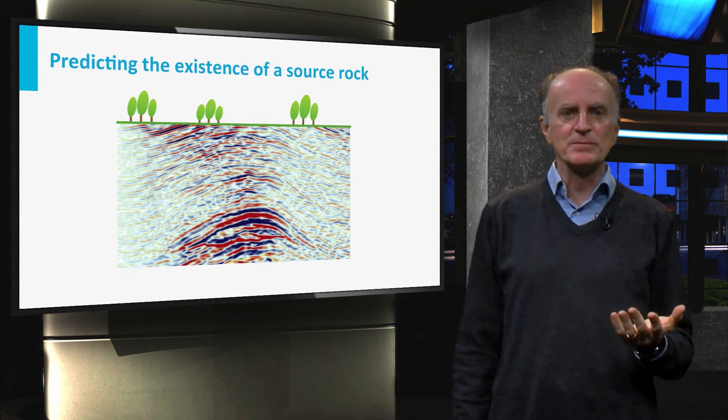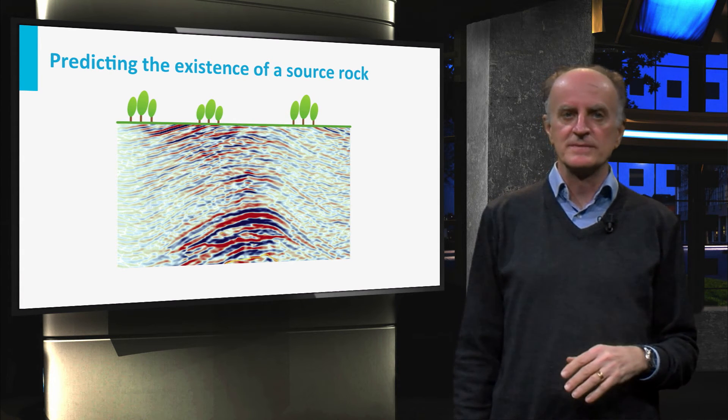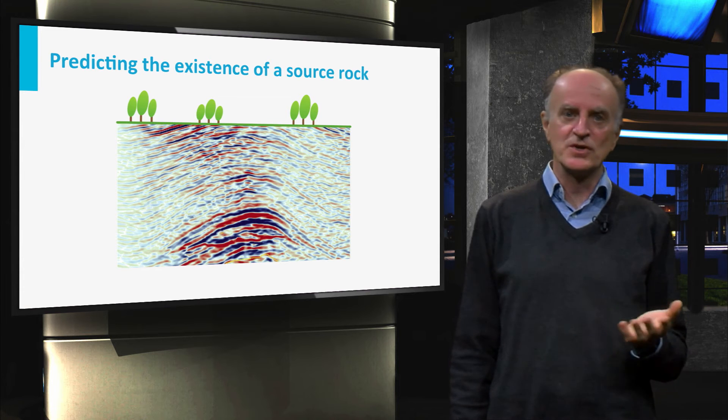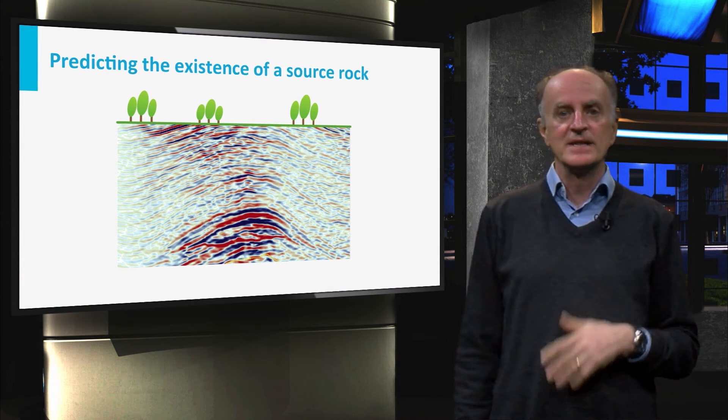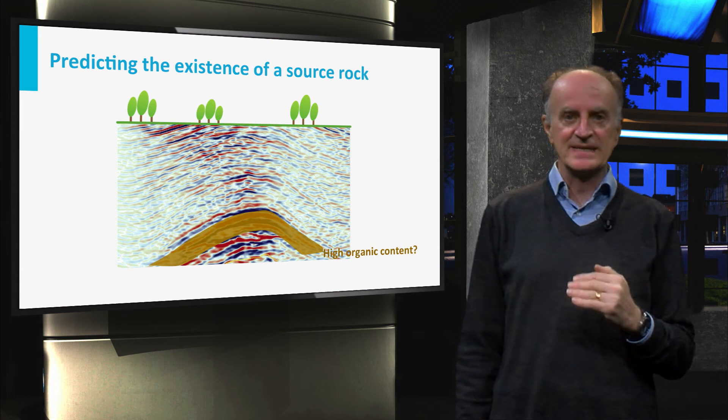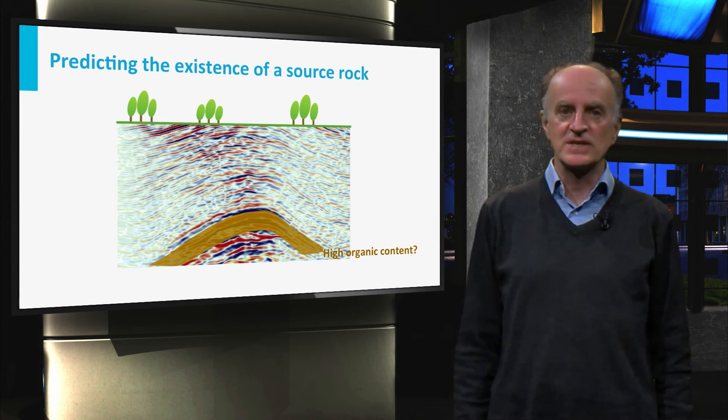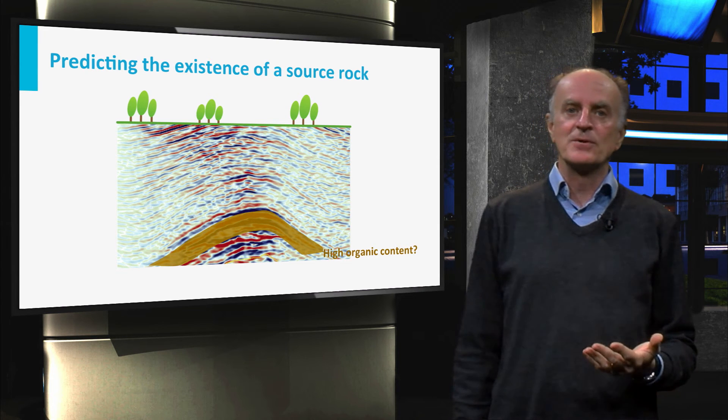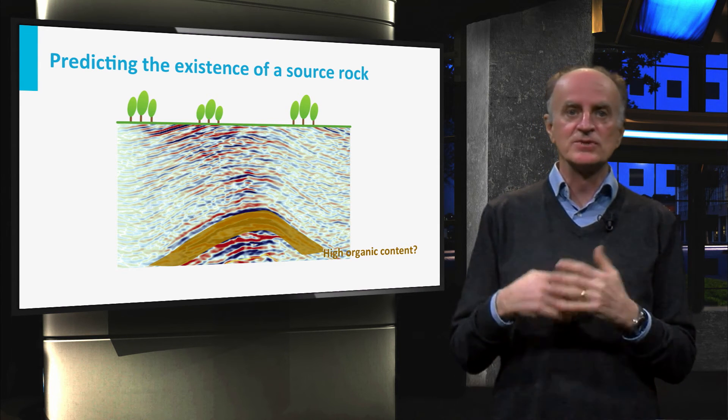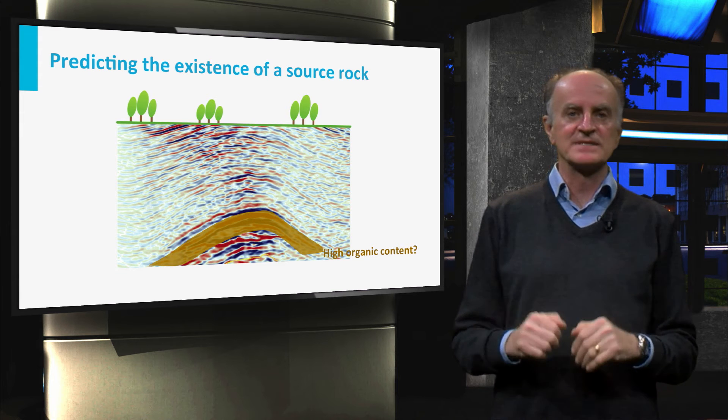How do we then determine if we have a productive source rock? Seismic images do not provide obvious answers to this fundamental question. The first step is to predict the presence of a rock rich in organic matter at depth. This is typically done combining geological models, regional knowledge and a detailed analysis of seismic data.